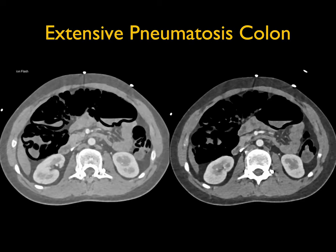Case three — we see pneumatosis. Whenever you think of pneumatosis, be it small or large bowel, you're thinking of ischemia. Not every case of pneumatosis is ischemia, but it's a very important diagnosis because pneumatosis is associated with ischemic bowel, which can be a surgical emergency. Many things — benign diseases as well as medications like steroids — can be the cause of pneumatosis.